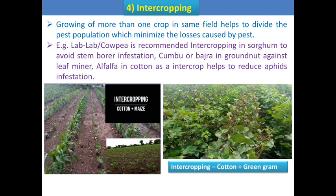The next technique is intercropping. Growing more than one crop in the same field helps to divide the pest population and minimize the losses caused by the pest. Growing one additional crop with the main crop helps divide or suppress the pest population. For example, lablab or cowpea is recommended as intercropping in sorghum to avoid stem borer infestation, or pearl millet or basella in groundnut against leaf miner, or alfalfa in cotton to reduce pest infestation.